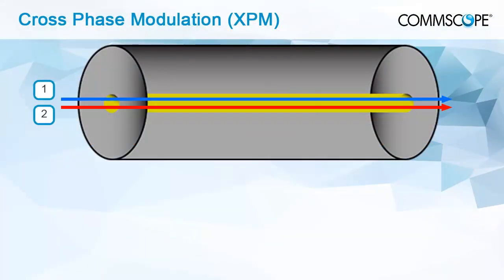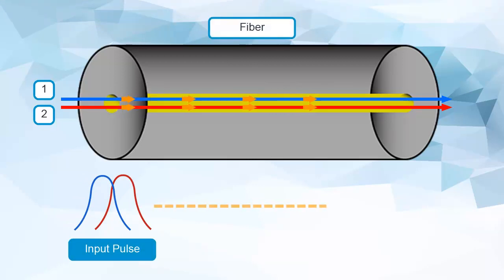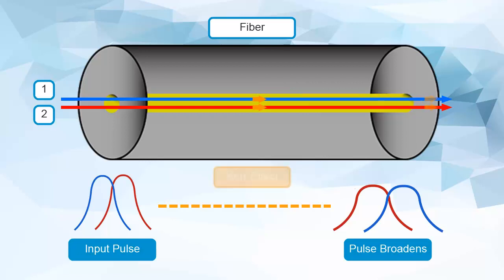Cross-phase modulation (XPM) is the effect that a signal in one channel has on the phase of another signal. Similar to self-phase modulation, XPM occurs as a result of the Kerr effect.